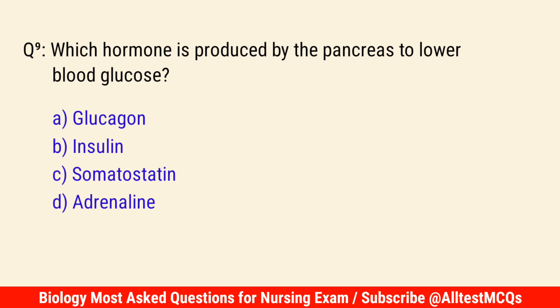Q9. Which hormone is produced by the pancreas to lower blood glucose? The correct answer is B: Insulin.